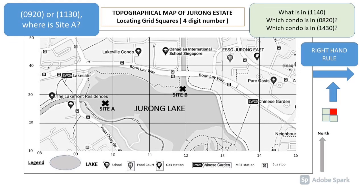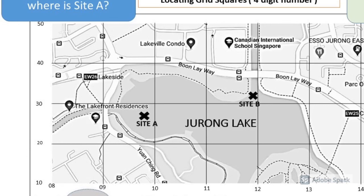So that's your basic introduction to how to find grid squares. Next, I need you to try the three questions in the green box: What is in grid square 1140? Which condominium is in 0820? And which condominium is in 1430? Take some time, write down your answers, pause the video, and when you're done, come back.